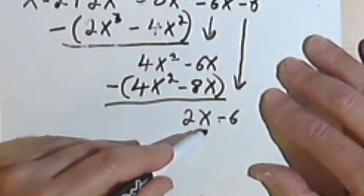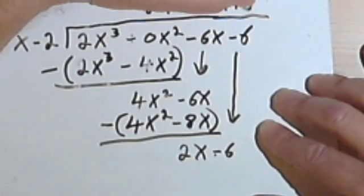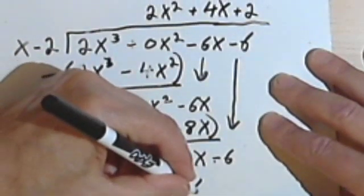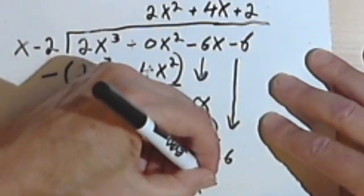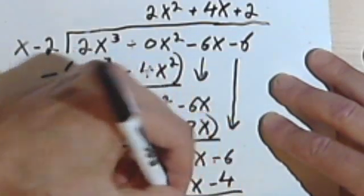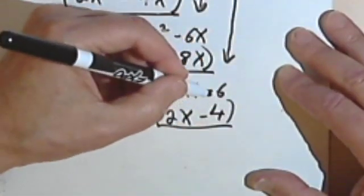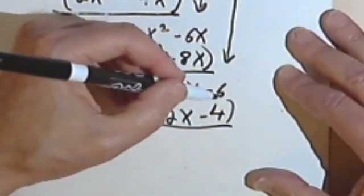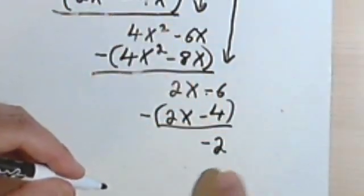x divided into the first term here into 2x goes 2 times. Plus 2. 2 times x minus 2. I'll have 2x. 2 times negative 2 is going to give me negative 4. Subtracting. I have negative 6 minus negative 4. Minus negative 4 is plus 4. Negative 6 plus 4 is negative 2. So this is my remainder.